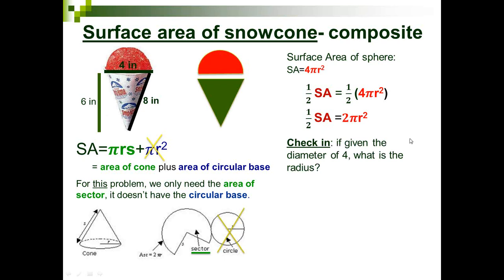Now we put our pieces together, but first a quick check-in: we were given a diameter of 4 inches, but all our equations ask for radius. If the diameter is 4, what would the radius be? Go ahead and chat your answer.